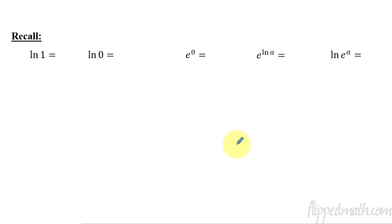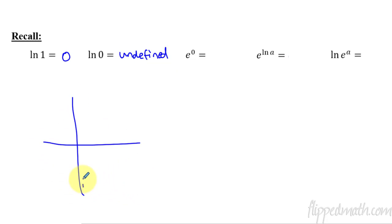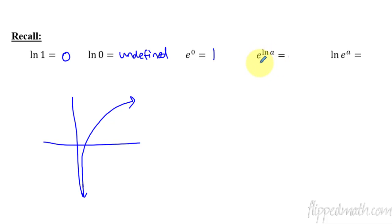Before we go on to logarithm and exponential stuff, I need to remind you of a few simple things. The natural log of 1 is equal to 0. The natural log of 0 is undefined. If you have a hard time remembering which is which, just remember what the graph looks like — there's a vertical asymptote at x equals 0, so you can't have x be 0. Also, e to the 0 equals 1 — any non-zero base to the 0 is 1. And e raised to the natural log of a, those cancel out and you get a. Same with the natural log of e to the a — those cancel and you get a.